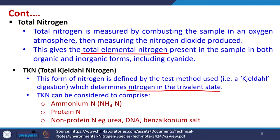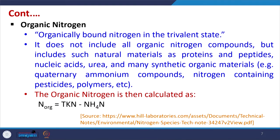Total Kjeldahl Nitrogen (TKN) is a very important parameter. This form of nitrogen is defined by the test method using Kjeldahl digestion, which determines nitrogen in the trivalent state. TKN comprises ammoniacal nitrogen, proteinous nitrogen, and non-proteinous nitrogen including urea, DNA, and other types of salts. Organic nitrogen refers to organically bonded nitrogen in the trivalent state. It includes natural materials such as proteins, peptides, nucleic acids, urea, and many synthetic organic materials, for example quaternary ammonium compounds, nitrogen-containing pesticides, and polymers.